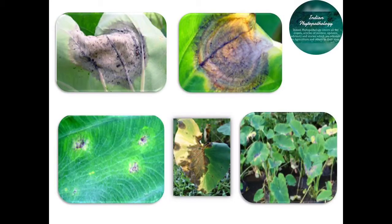This pathogen remains in the soil as a chlamydospore or as an oospore, which serves as the primary source of infection. The secondary source of infection is by wind-borne sporangia.